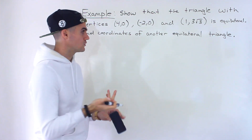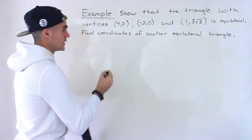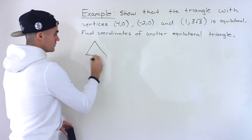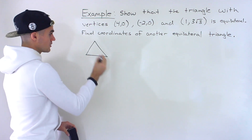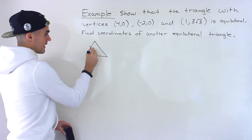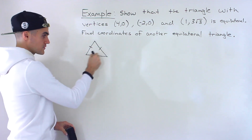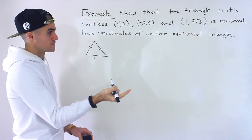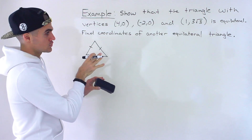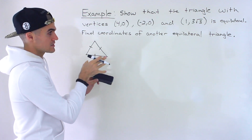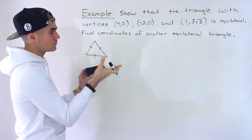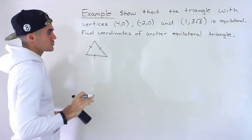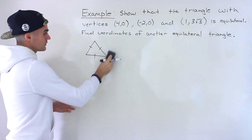So just as a quick review, an equilateral triangle is a triangle that has all three sides of the same length. To show that a triangle is equilateral, we have to find the length of all three sides and make sure they're all equal.